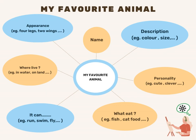This is the name and appearance: four legs or two wings. This is the description — the color and size, and the weight. This is the habitat: in water or on land. This is the character or personality.